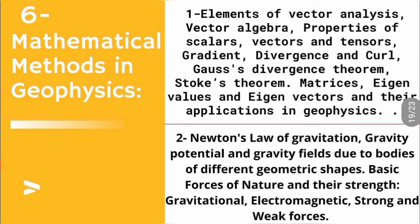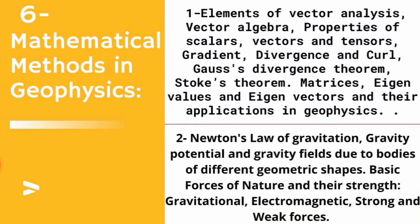In summary, there are 6 units total: 3 units from geophysics and 3 units from physics — electromagnetism, mathematical methods, and nuclear physics. This was my book list for the Geophysicist exam. If you need PDFs of any of these books, comment below and I will make a video with links. If you liked this video, please subscribe to my channel, press the bell icon and the thumbs up button. Thank you so much.